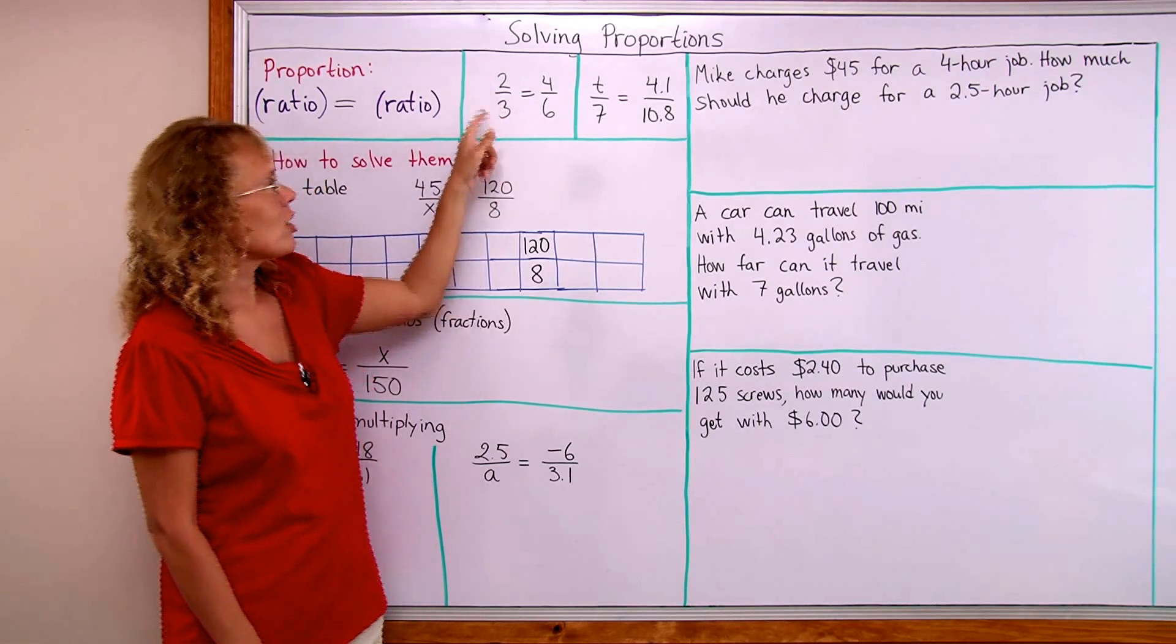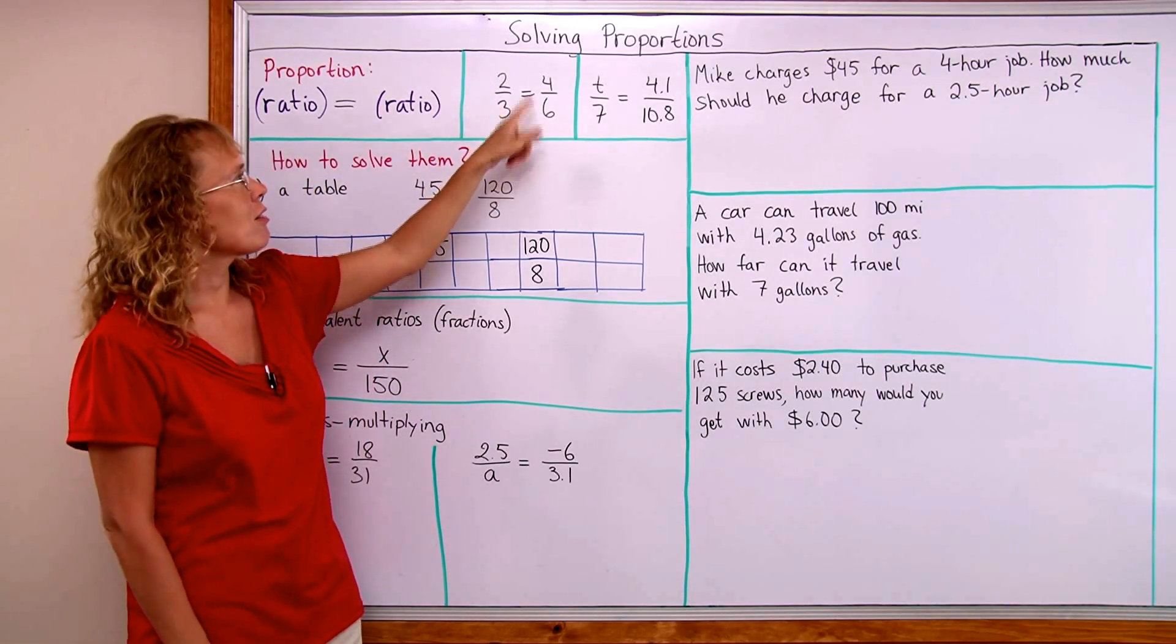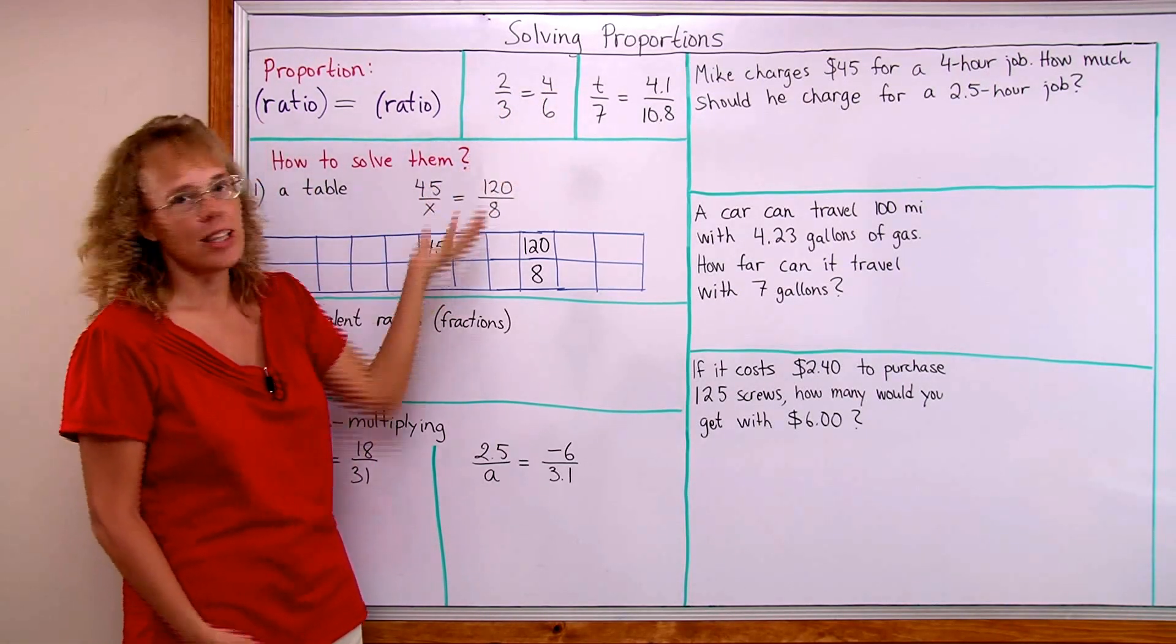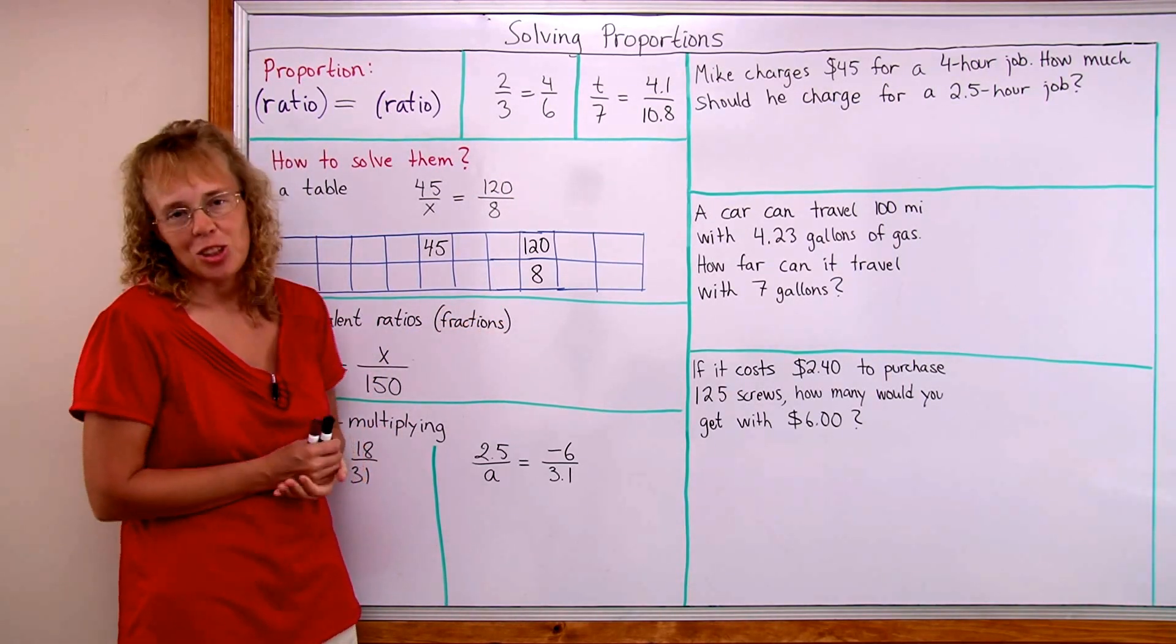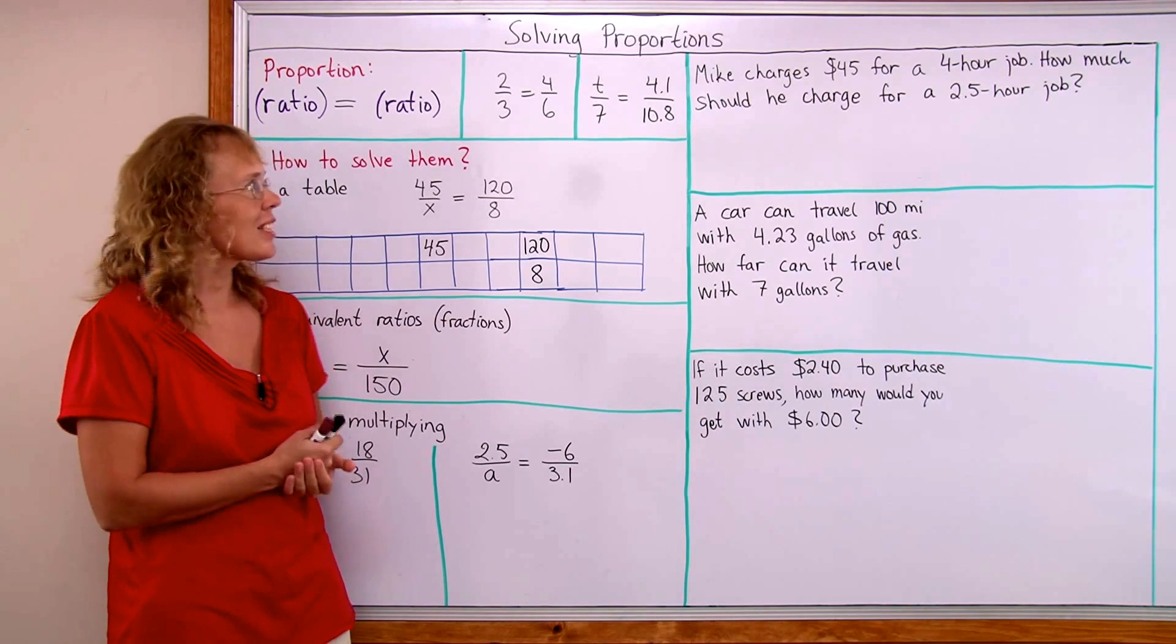Here's two examples. One ratio is 2 to 3 and then another ratio is 4 to 6 and they are equal. So that's a proportion. You can of course think of them as fractions too. 2 thirds equals 4 sixths.